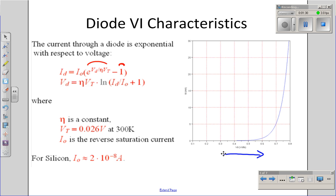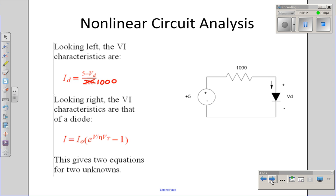That creates a problem. If I have a circuit with a diode, I have a nonlinear set of equations to solve. For example, suppose I've got a 5-volt source driving a 1,000-ohm resistor driving a diode. From this, find the voltage and current through the diode.